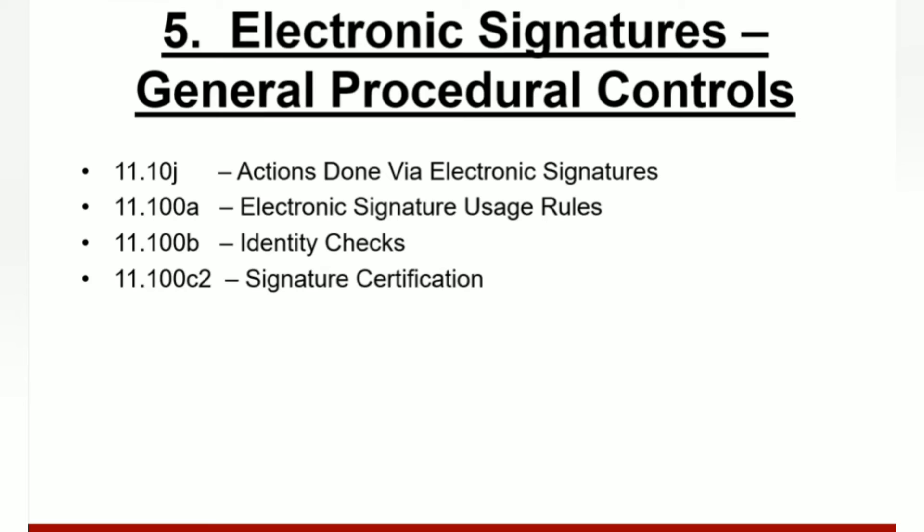Section five covers electronic signatures general procedure controls, still part of non-biometric electronic signatures. For 11.10B, a procedure holding individuals fully accountable and responsible for actions initiated under their electronic signature must exist. For 11.100A, each individual signature must not be reused or reassigned to anyone other than the original owner. For 11.10A, use of another individual's electronic signature is prohibited even if authorized. Each person's identity must be adequately verified prior to issuing an electronic signature. A procedure for verifying the requester's identity when reissuing passwords must exist. Individuals with electronic signature privileges must certify the legal equivalents of their signature with a handwritten signature, and records of user certifications must be maintained.